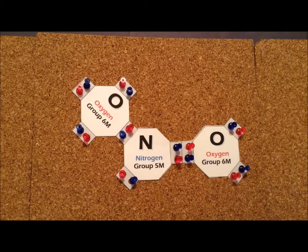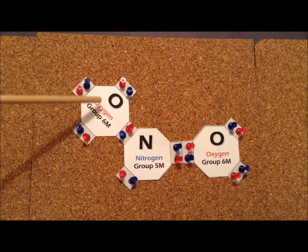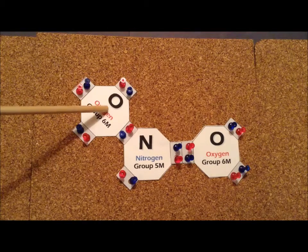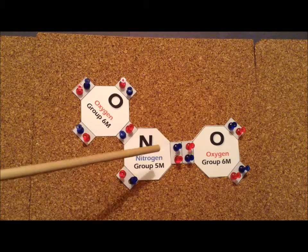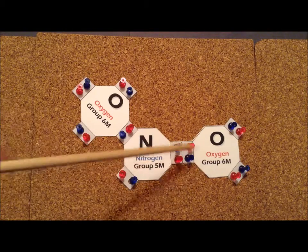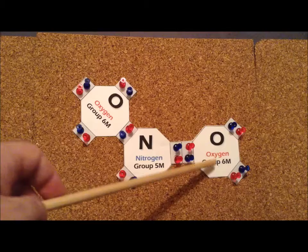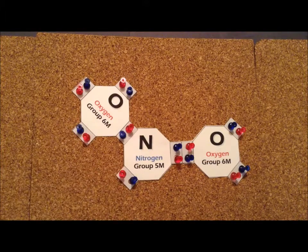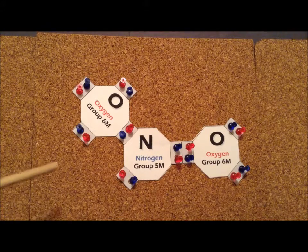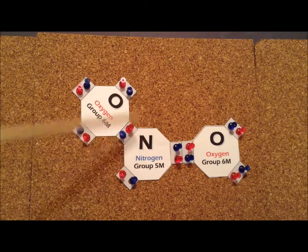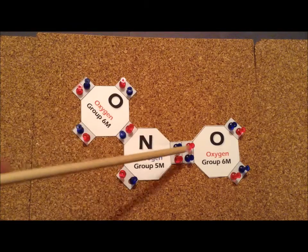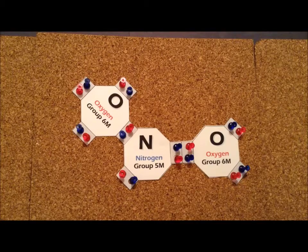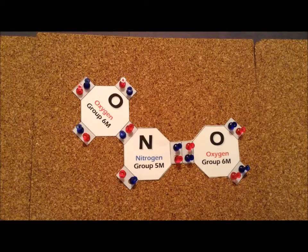One important thing to notice here is that we can form the Lewis structure by having a single bond between this oxygen and this nitrogen, but a double bond between this oxygen and nitrogen. But there's nothing special about this particular oxygen over that one. So we could just as well have drawn a second Lewis structure, a second resonant structure, where the double bond was between nitrogen and oxygen on this side, and the single bond was over here.